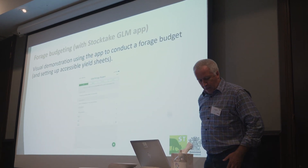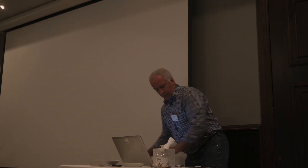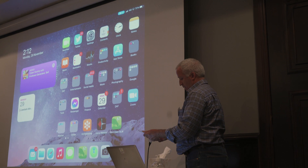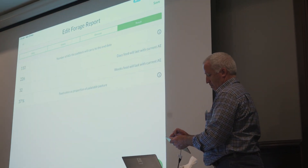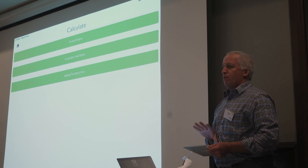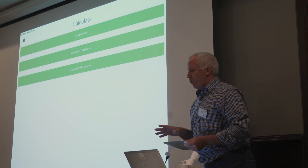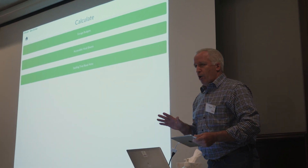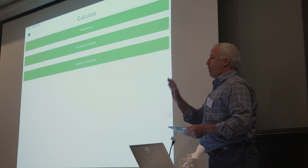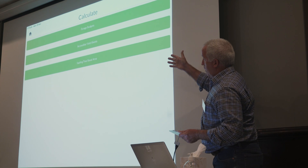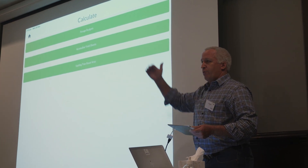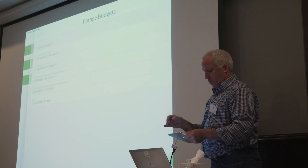I'll just briefly run through with you exactly how budgets run straight off my iPad. You can do standalone forage budgets — in the app itself you can set up properties, paddocks, and then do individual forage budgets on a paddock basis. In here you can see forage budgets, accessible yield sheets, and tree basal areas for saplings, so in the far north if they want to work out tree basal area, they can. Let's just take a look at a forage budget.